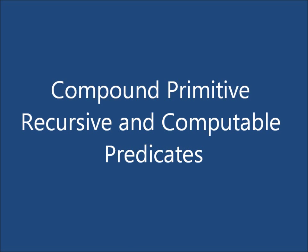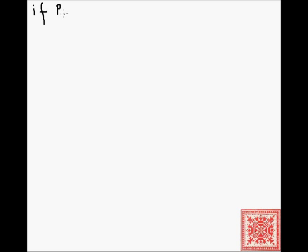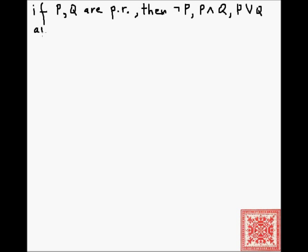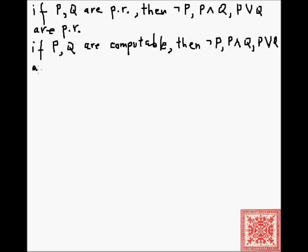The previous theorem furnishes us two very useful corollaries. The first corollary is that if P and Q are primitive recursive, then not-P, P-and-Q, and P-or-Q are also primitive recursive. Similarly, if P and Q are known to be computable, then all of those compound predicates are also computable.